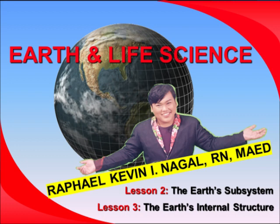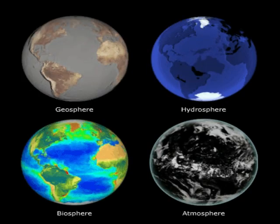Today's topic is about the Earth's subsystem and the Earth's internal structure. The Earth's subsystems are divided into four — these are the four spheres of the Earth. The solid part, which is the geosphere.